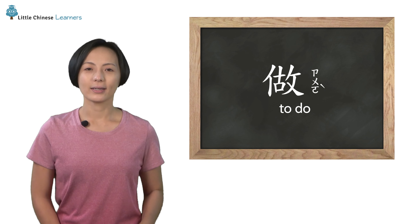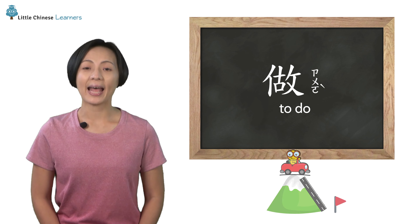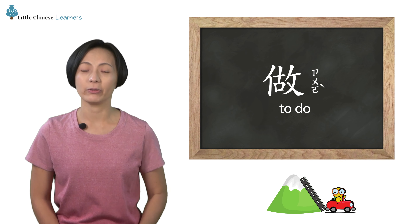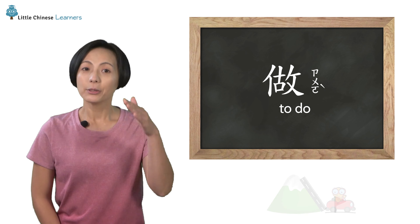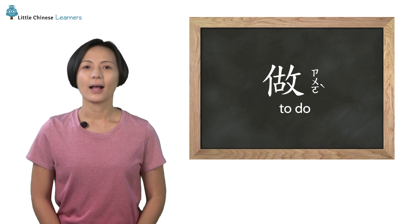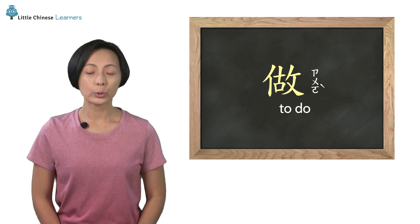做. 做 means to do, and it has the fourth falling tone. 做.